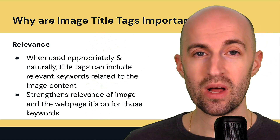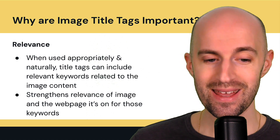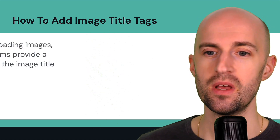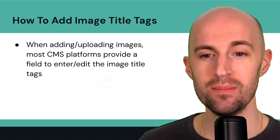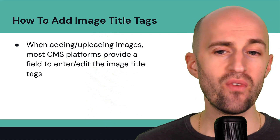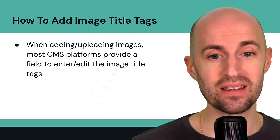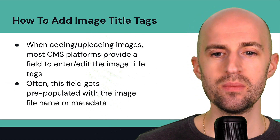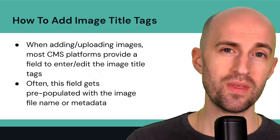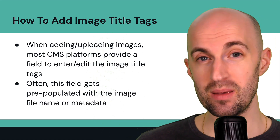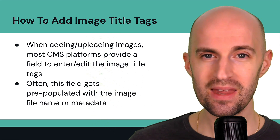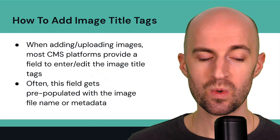So how do you add image title tags to an image? When you're adding or uploading images, most content management systems or CMS platforms provide a field to enter or edit the image title tags. Sometimes by default, the field gets pre-populated with the image file name or the metadata within the image itself — especially if you downloaded a stock photo and it has it within there. It pre-populates it, but you can edit this afterwards as well.